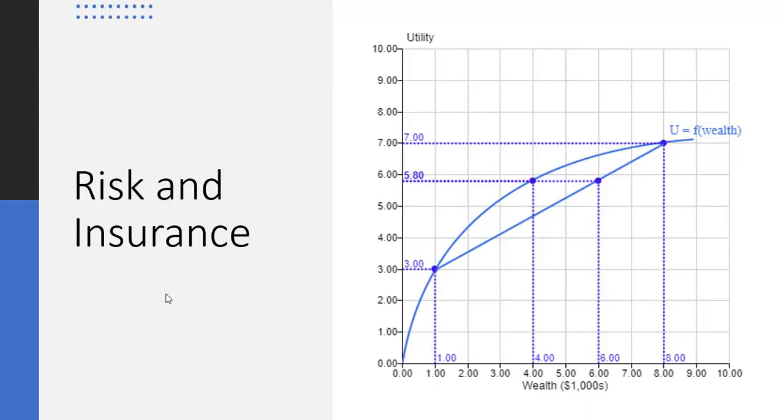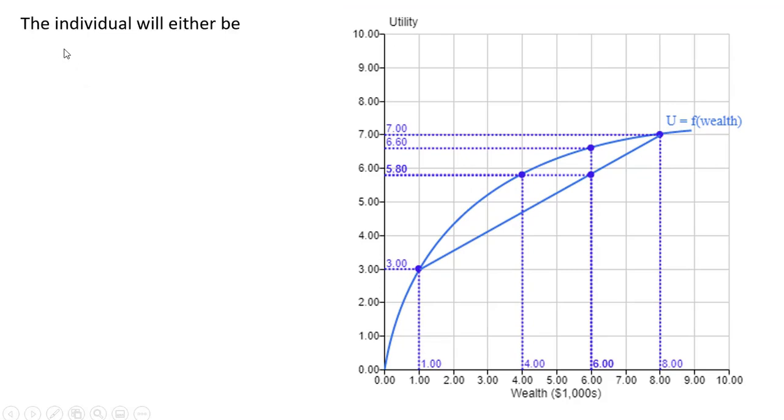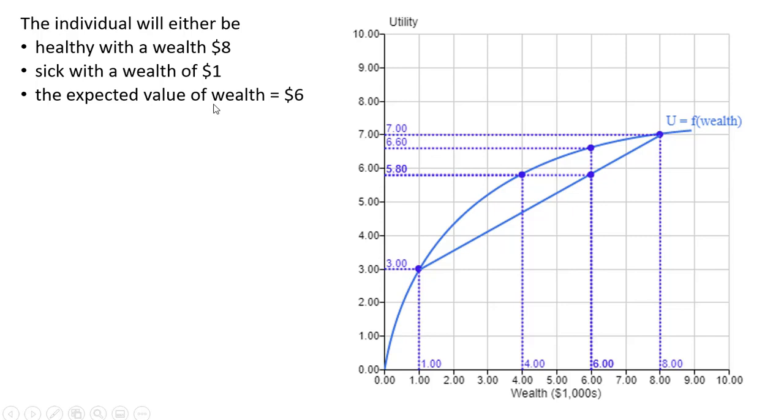Hello, in this video we're going to look at risk and insurance. We have an individual who will either be healthy with a wealth of $8 or sick with a wealth of $1. The expected value of wealth equals $6.